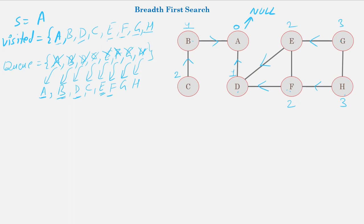The output is A, B, D, C, E, F, G, H. As we can see: A is visited at level 0, B and D at level 1, C, E, F at level 2, and G and H at level 3. This is the breadth-first search algorithm.